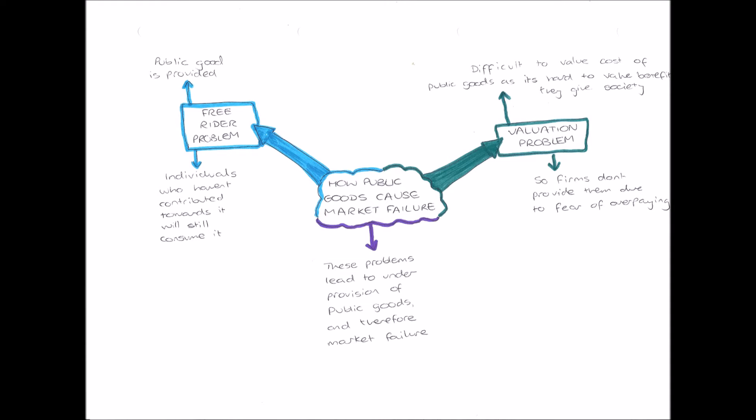Next, we have the valuation problem. It is difficult to value the cost of public goods because it is difficult to value the benefits they give to society. It's difficult to put a price on a lamp post because we don't know how many people use it. In one area a lamp post might be worth a lot because many people use the light, but in another area only two or three people might use it at night, so it isn't worth as much. Therefore, it is difficult to value how much public goods cost because it's difficult to value their benefit to society. If a private company was looking at providing a public good like lamp posts, they don't know if they'll be overpaying or undervaluing them.